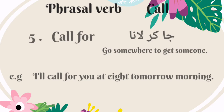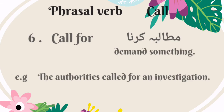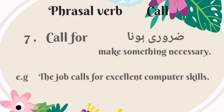The fifth phrasal verb is 'call for.' It means go somewhere to get someone — Urdu mein is ka matlab hai jaa kar lana. For example: I'll call for you at 8 tomorrow morning. 'Call for' also means demand something — Urdu mein is ka matlab hai mutalba karna. For example: the authorities called for an investigation. A third meaning of 'call for' is make something necessary — Urdu mein is ka matlab hai zaroori hona. For example: the job calls for excellent computer skills.